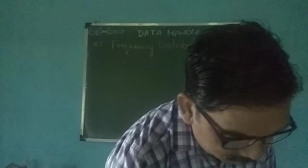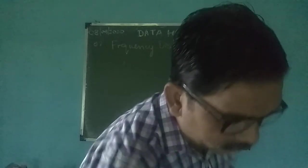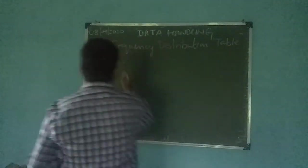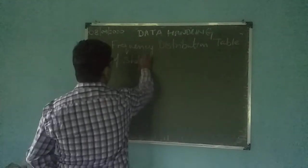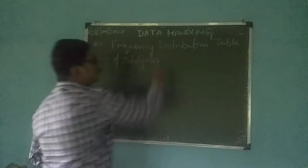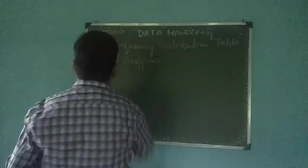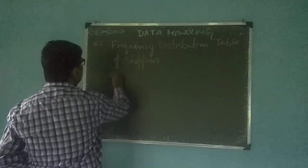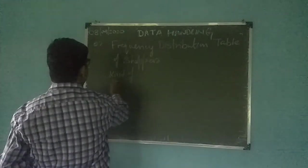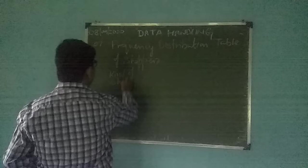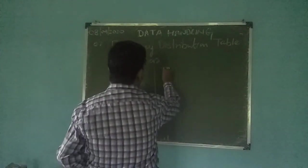Frequency distribution table for shoppers. This setting is very important. Now we will write the heading as kind of shoppers, then comes tally mark.